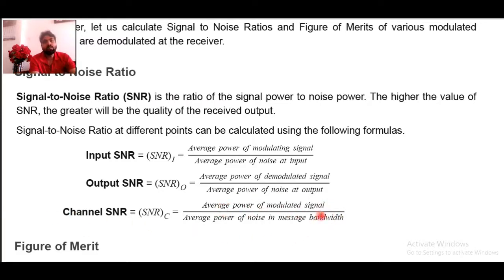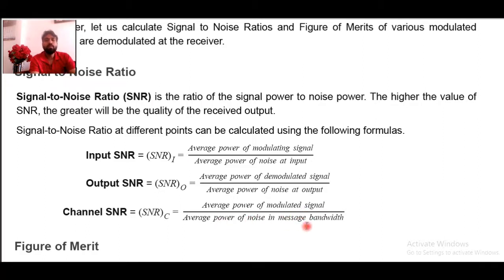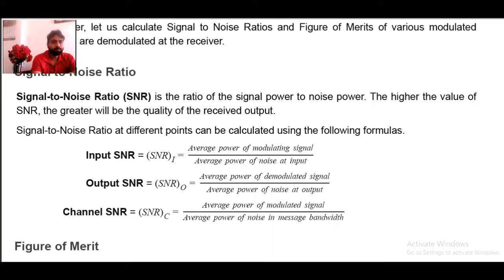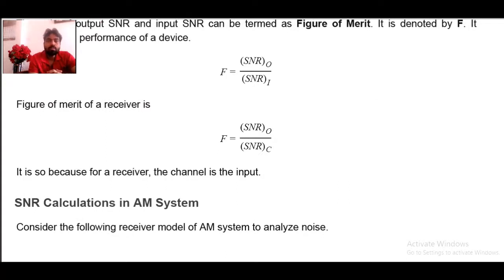Channel SNR can be calculated as the average power of the modulated signal — where the signal is now superimposed with the carrier — divided by the average power of noise in the message bandwidth. Whatever channel bandwidth exists, the noise created because of this channel is taken into account. So taking care of input SNR, output SNR, and channel SNR, if we find out the SNR values at input and output, a very specific terminology comes into play: figure of merit.